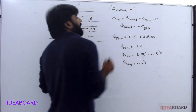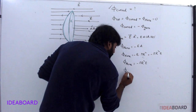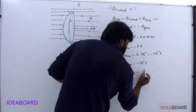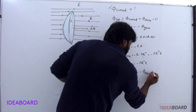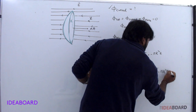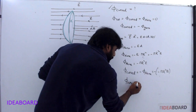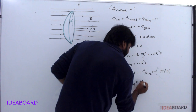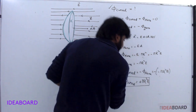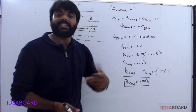So flux through curved surface equals minus flux through plane, which is minus of minus pi r square into E. Therefore flux through curved surface is equal to plus pi r square into E.